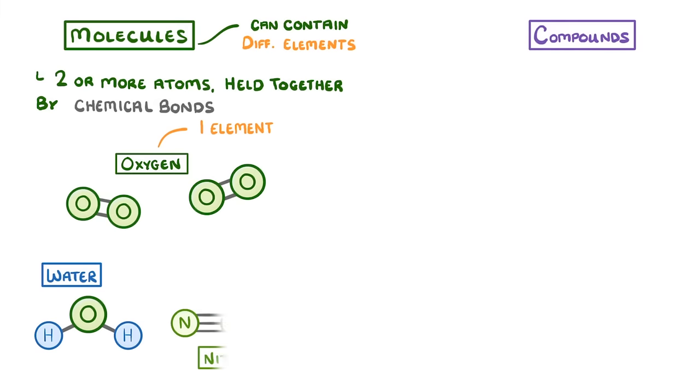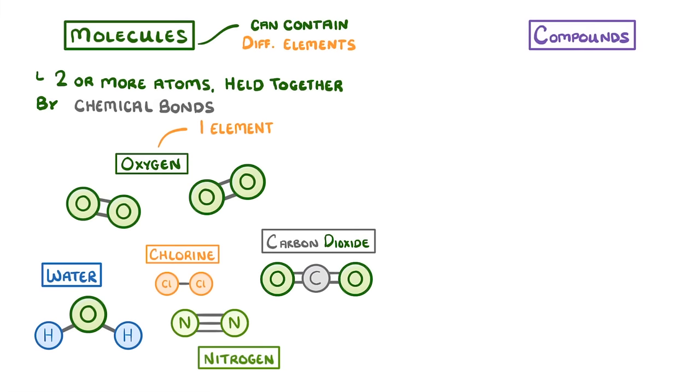Other molecules include nitrogen, chlorine, and carbon dioxide. But something like helium, which exists as a single atom, wouldn't count as a molecule. Because remember, molecules need two or more atoms.